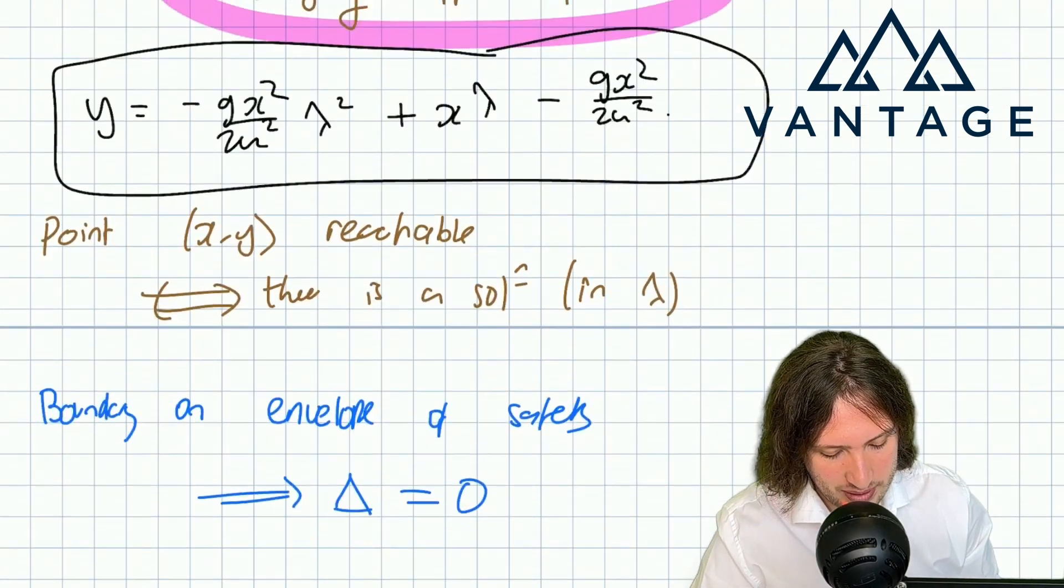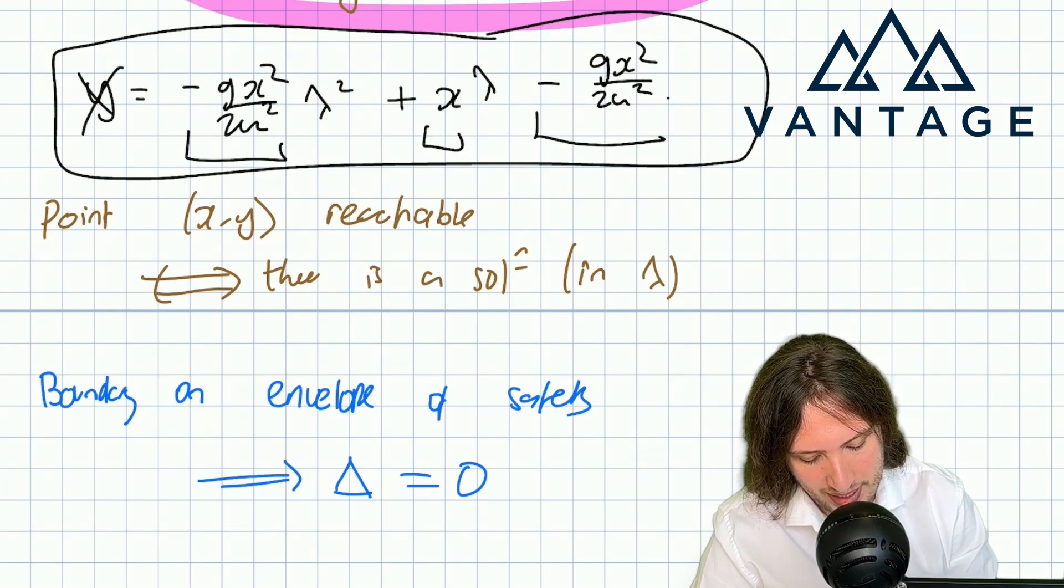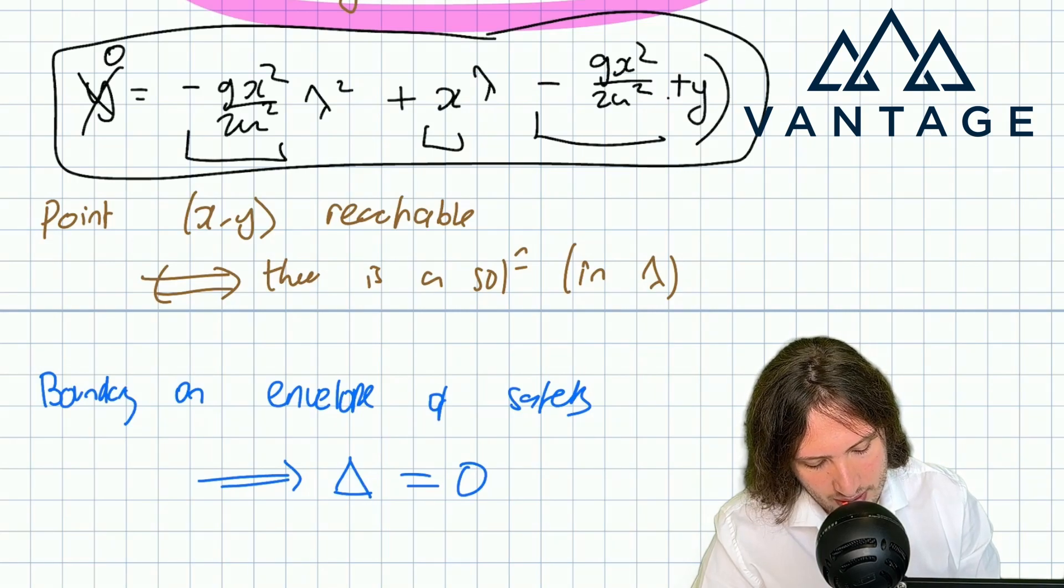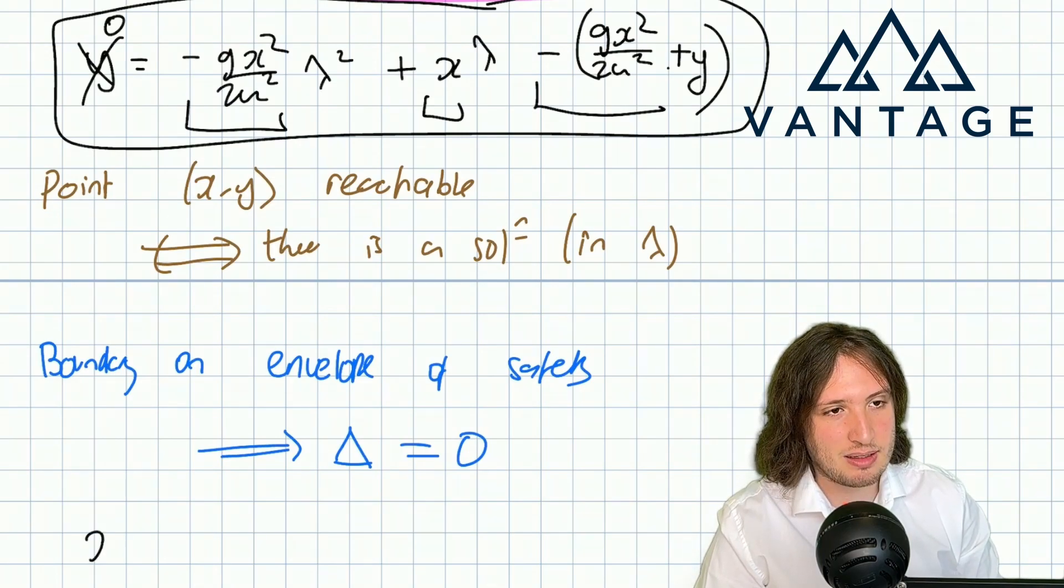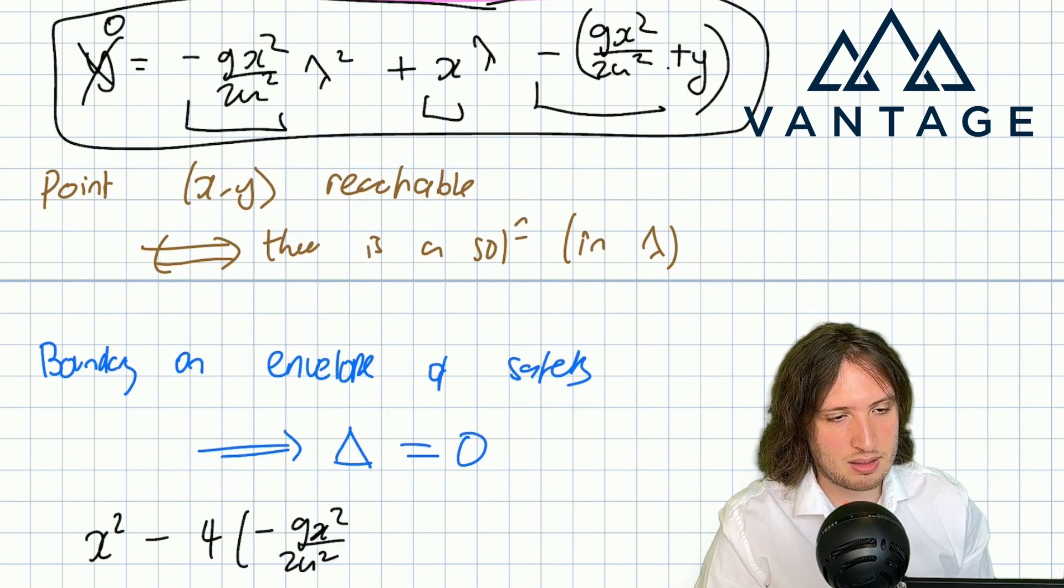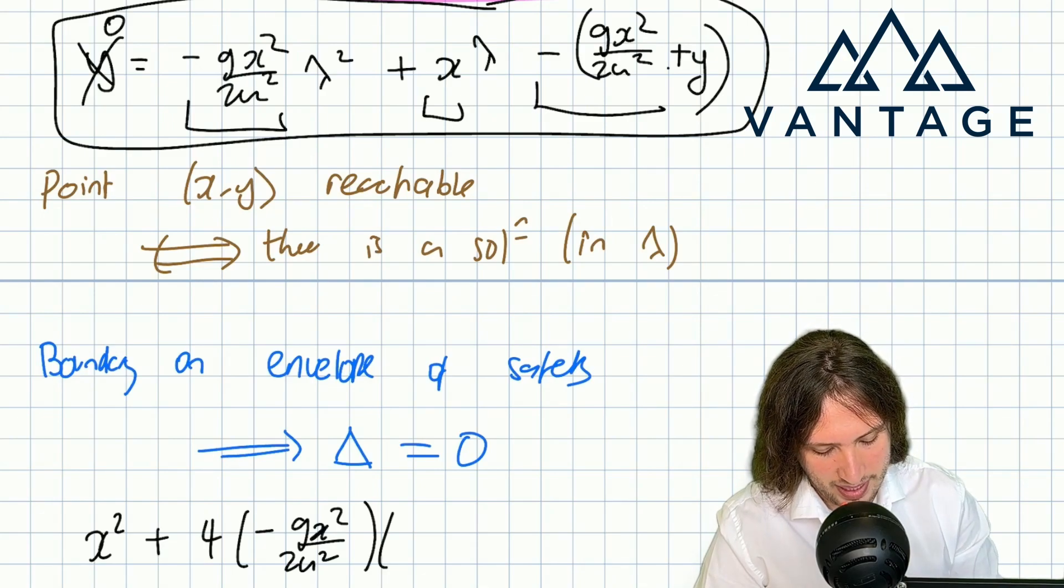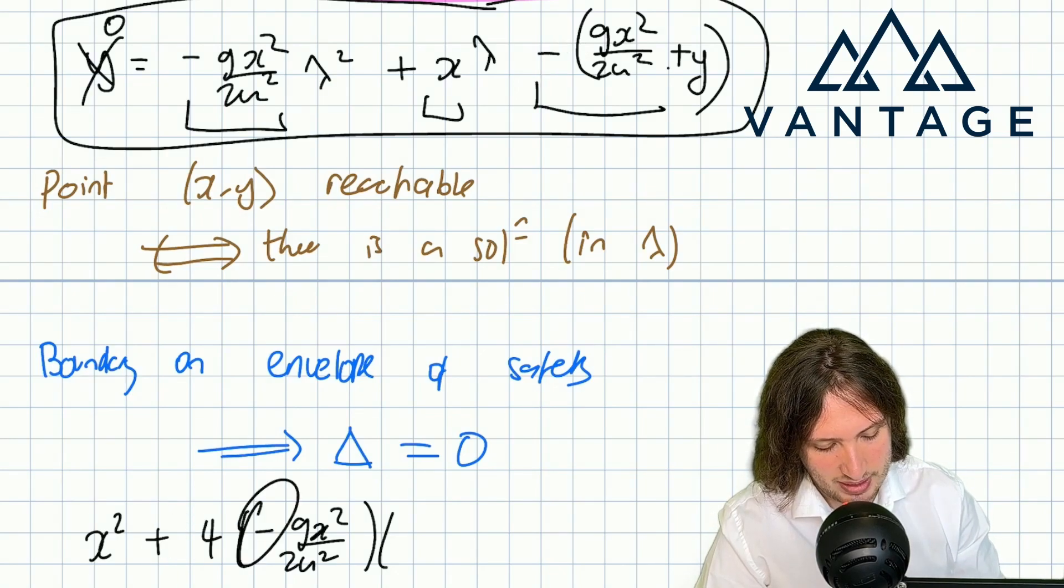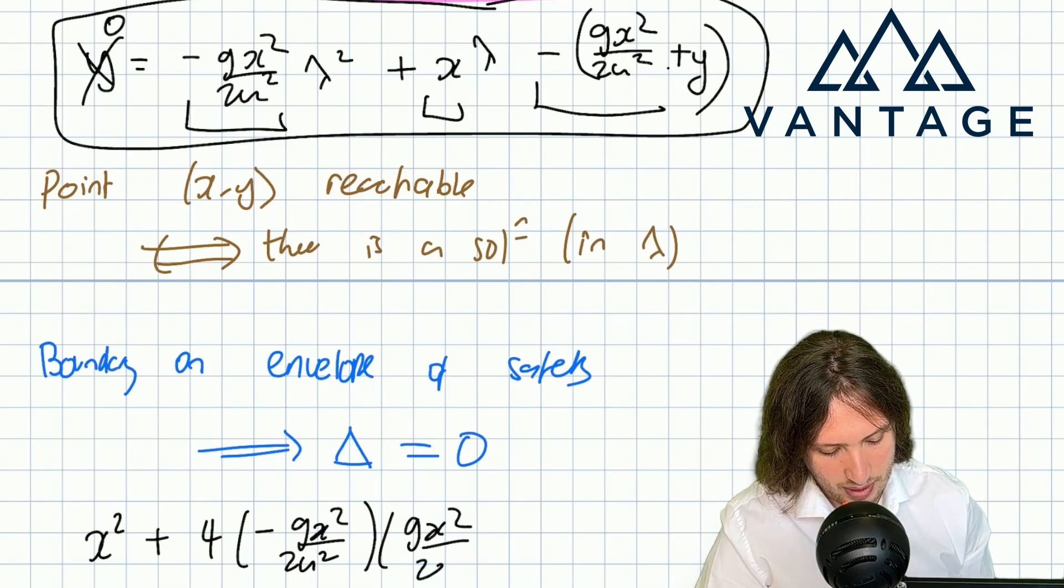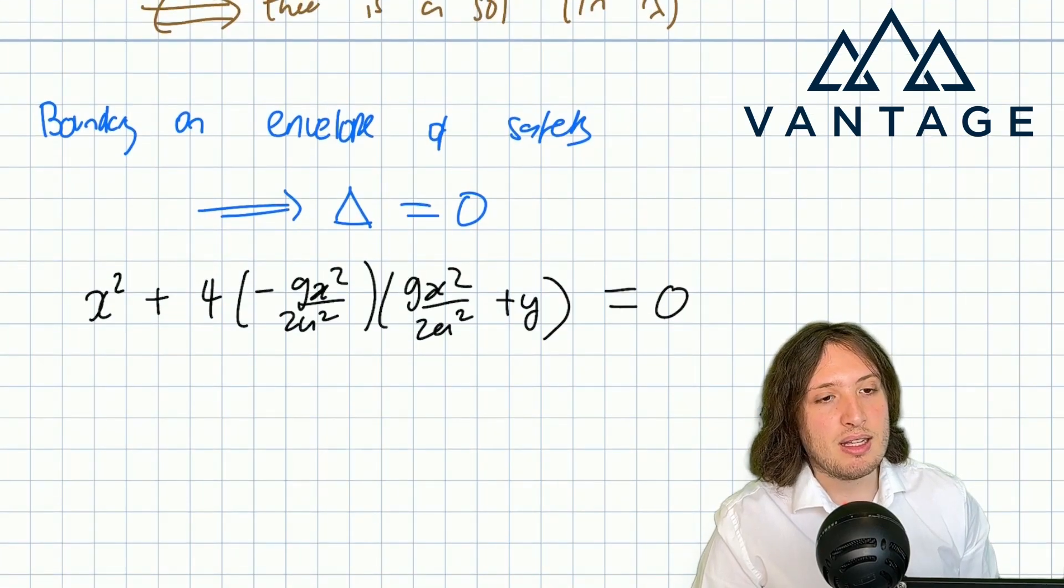Let's write down what we get from a zero discriminant on this quadratic. This is a, this is b, this is c—I need to bring the y over because to take a discriminant I need zero on the other side. I get b² minus 4ac.